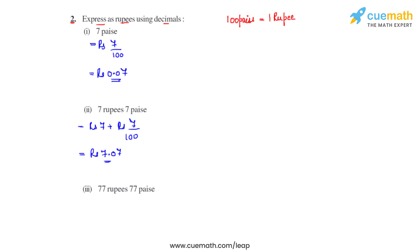Similarly, coming to the third bit, we have 77 rupees plus 77 paise, so converting that into rupees we write it as 77 divided by 100. So dividing 77 by 100 gives us 0.77, adding that to 77 gives us rupees 77.77.